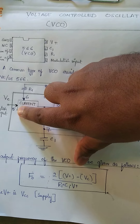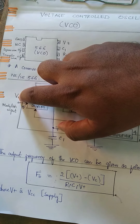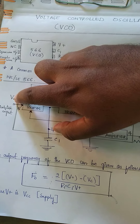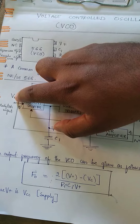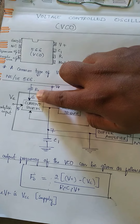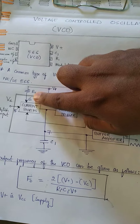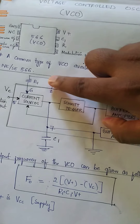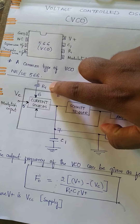What does this IC consist of? It is an 8-pin IC. Pin number 1 is ground, and pin number 2 is no connection — we are not using any change on it. Pin number 3 is the square wave output, and pin number 4 is used for triangular wave output.